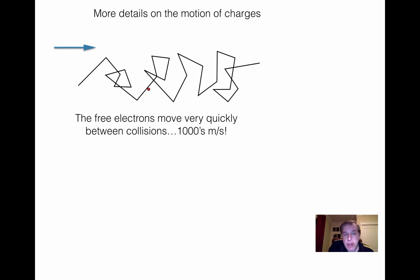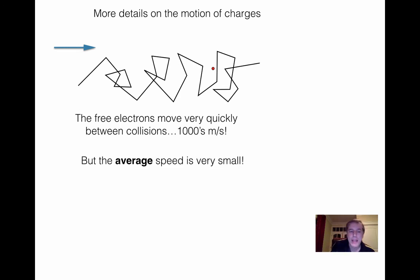If you look at the actual speed between collisions, you can do a calculation — it's actually several kilometers per second at ordinary room temperatures. So they're moving very, very quickly between collisions. But because of the large number of collisions, the net motion is to the right but very slow because it keeps bouncing back and forth. So the average speed is very small compared to those numbers.